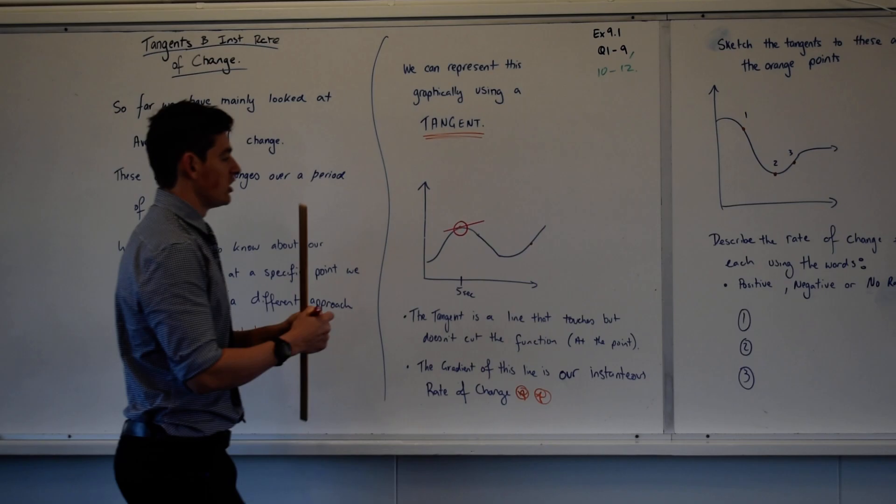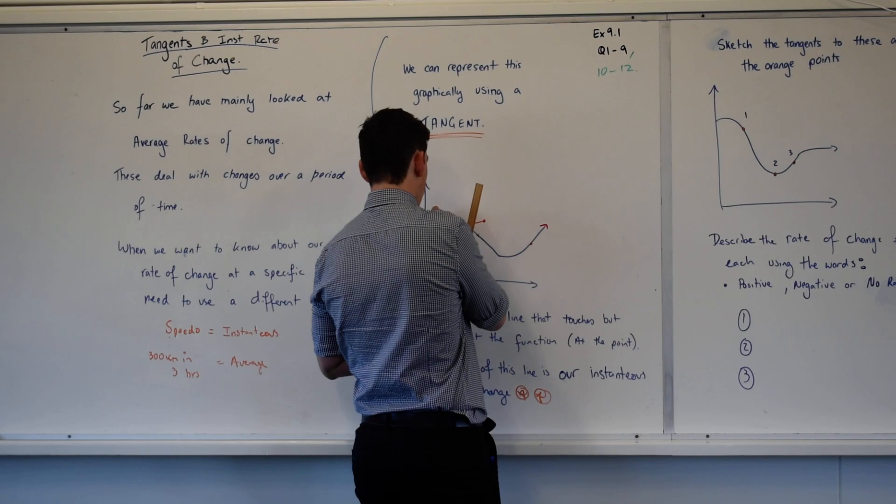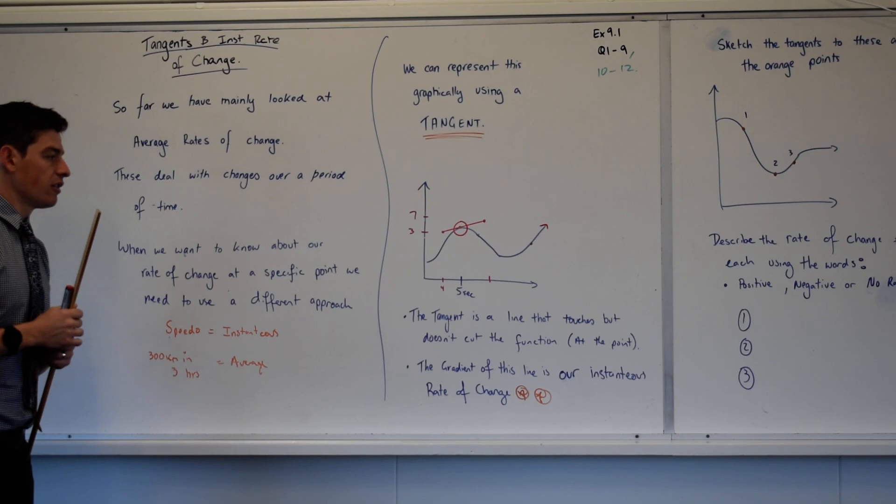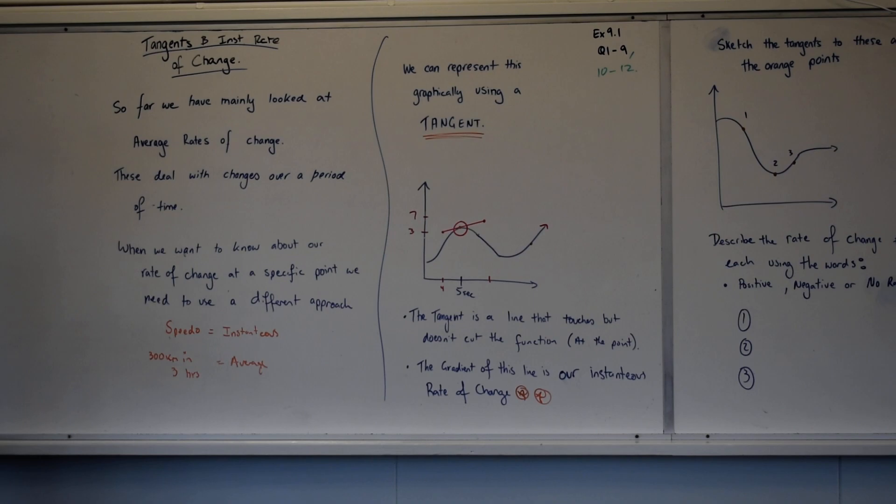So how much is this function changing at 5 seconds? And let's say this function, this value here was 6, and we'll go 7, and we'll call this 4, and we'll call that, I don't know, 3. Tell me what the gradient of that, what's my instantaneous rate of change?